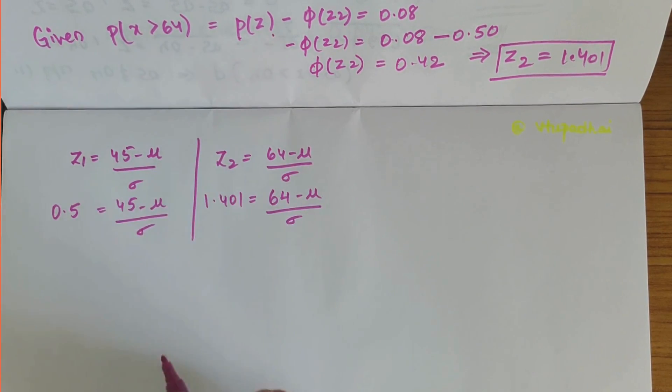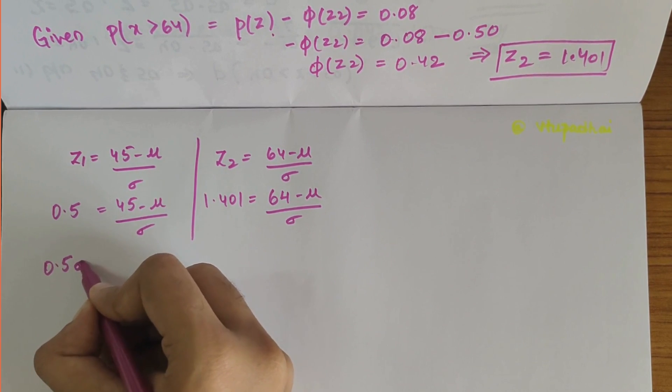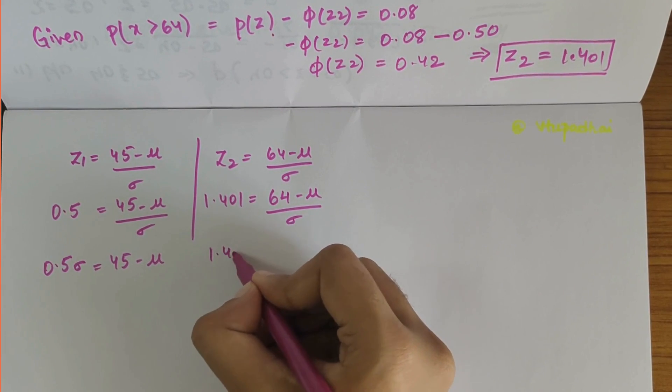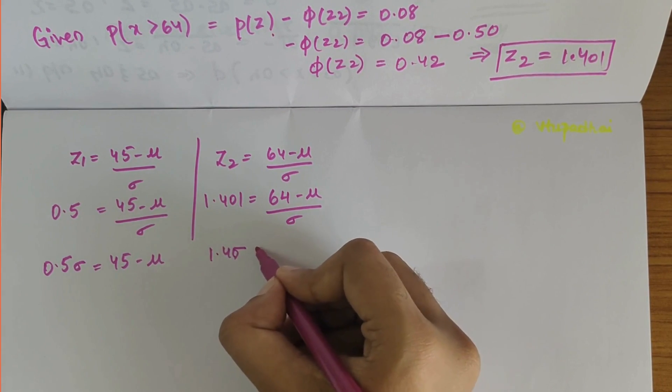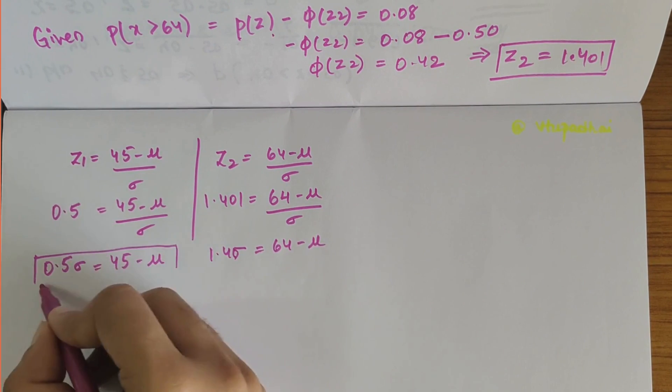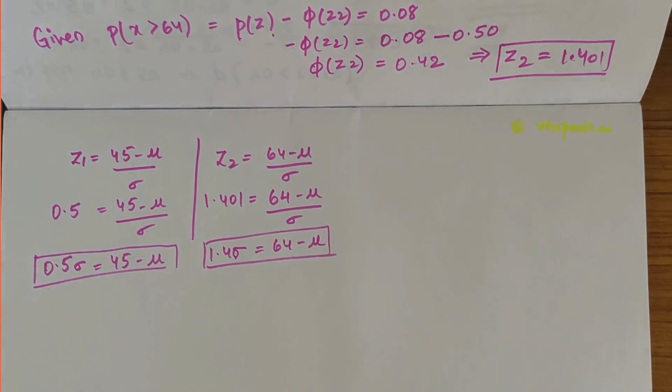Sending σ to the other side: 0.5σ = 45 - μ, and 1.4σ = 64 - μ. Now when you solve these two simultaneous equations, you can find μ and σ.